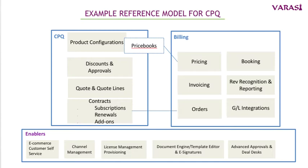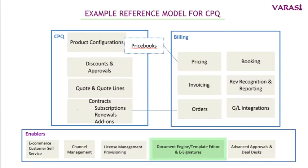You likely have a system for selling your products online, or systems for managing partners — maybe Salesforce partner communities, for instance. There are systems to provision and manage licenses for customers in the SaaS world. You may have applications for managing documents and electronic signature workflows. Advanced approvals are strictly speaking a CPQ feature, and you may have deal desks within your organization managing such advanced approval workflows.